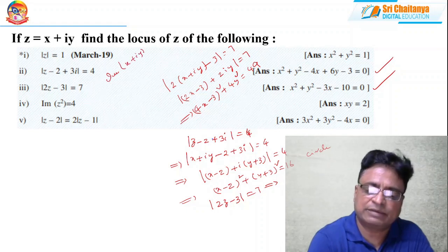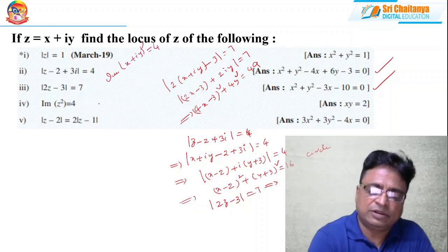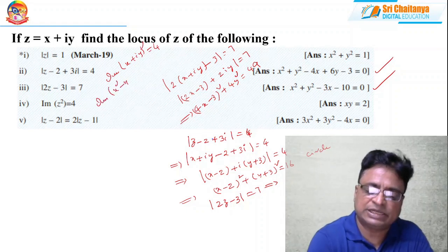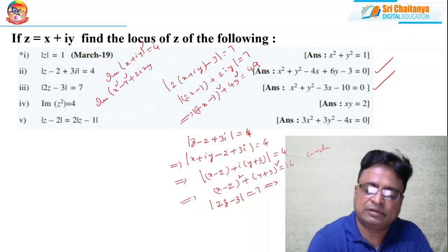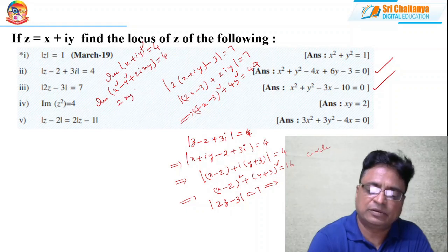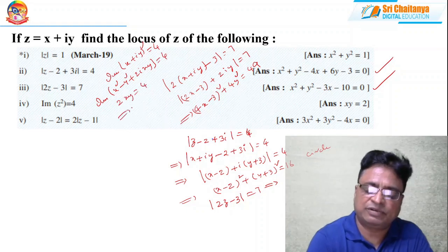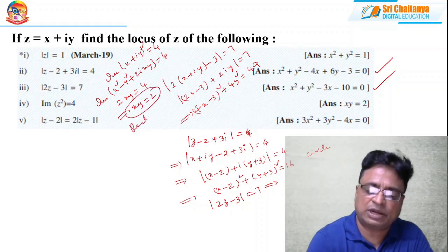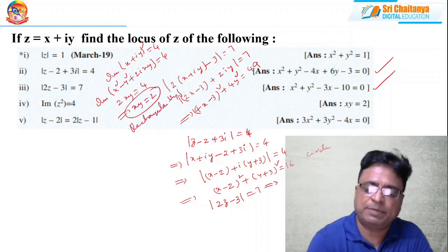Similarly, Im(z²) = 4 is given. z² = (x + iy)² = x² − y² + 2ixy = 4. So the imaginary part of this is 2xy. Therefore 2xy = 4, which gives xy = 2. This is called a rectangular hyperbola.